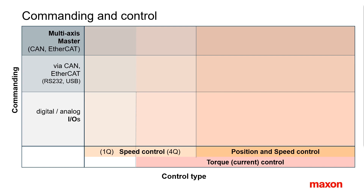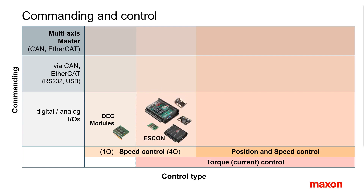Let us place the Maxon controller families in this scheme. The DEC modules provide simple one-quadrant open-loop or closed-loop speed control based on low-resolution Hall sensor feedback, with an analog 0 to 5 volt signal as the speed set value. ESCON servo controllers are four-quadrant dynamic speed controllers for brushed or brushless motors, commanded by digital and analog IOs. There is no bus interface — the USB connection serves for configuration purposes only. The ESCON controllers are very versatile concerning feedback, set value options, and the configuration of inputs and outputs.